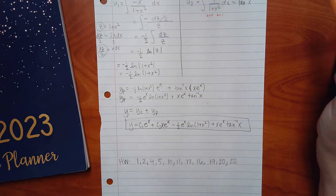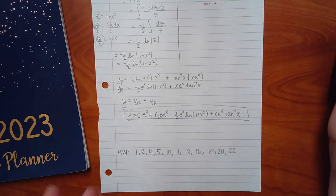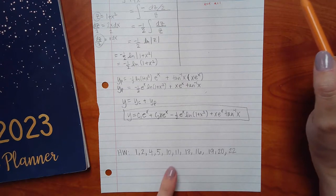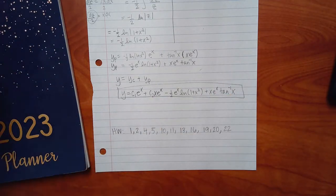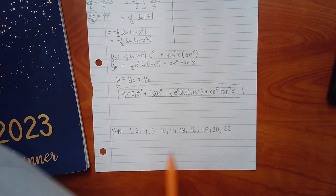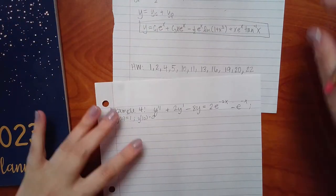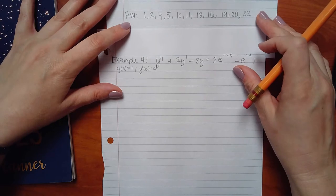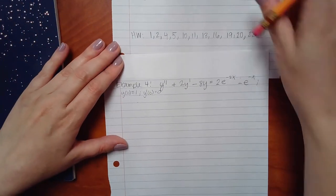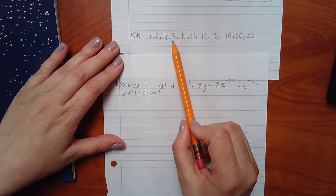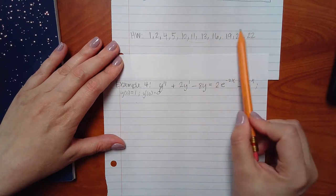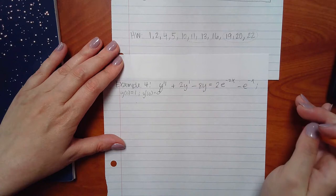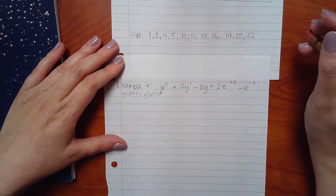I have one more example. The homework set is down here — I'll put it on screen again when we finish example four. So far I think we have enough to do the first set of problems from examples one through three, and then these next three will be like example four.